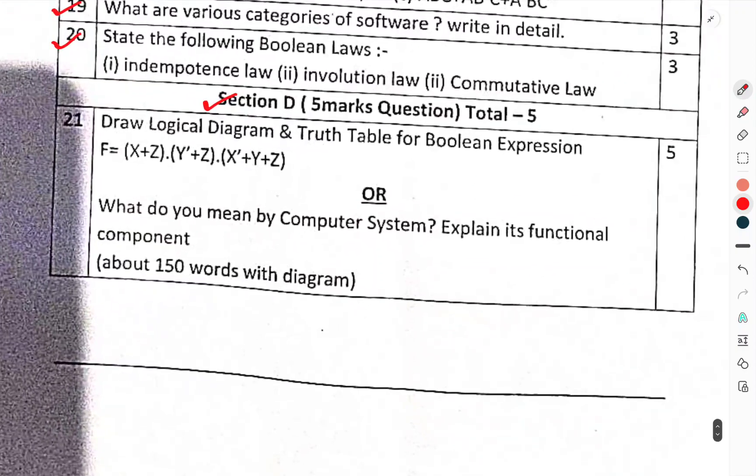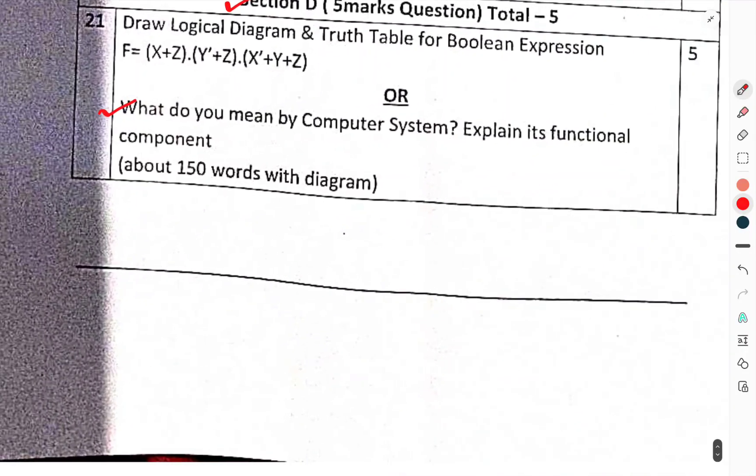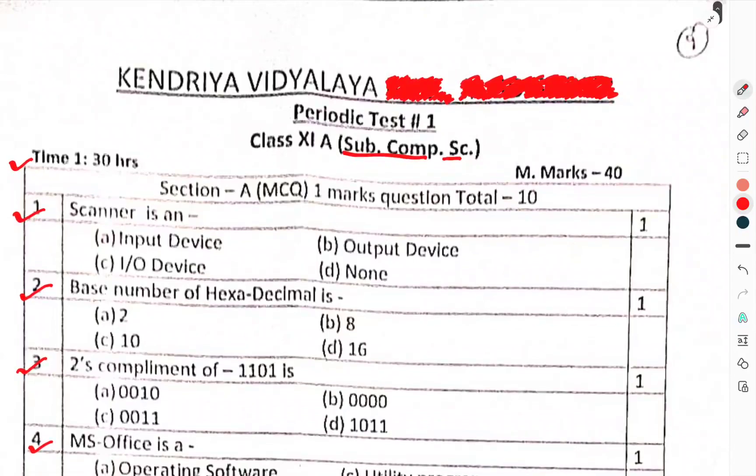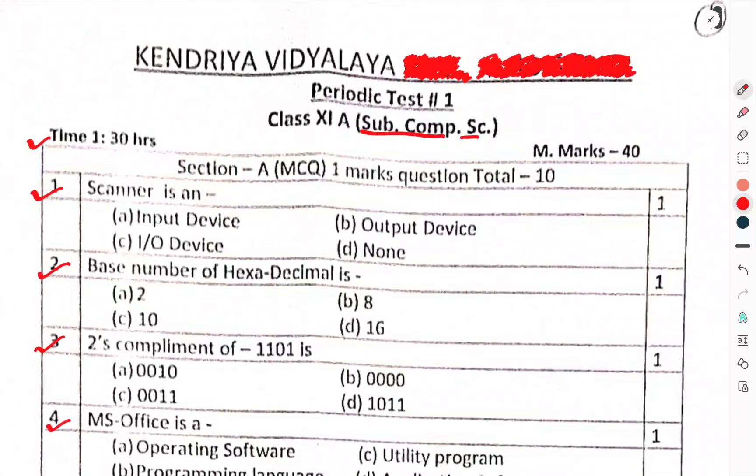Draw logical diagram and truth table of Boolean expression. What do you mean by computer system? Explain its functional components in about 150 words with diagram. This was the question paper of class 11th periodic test 1, subject computer science. That's enough for this one. Thank you.